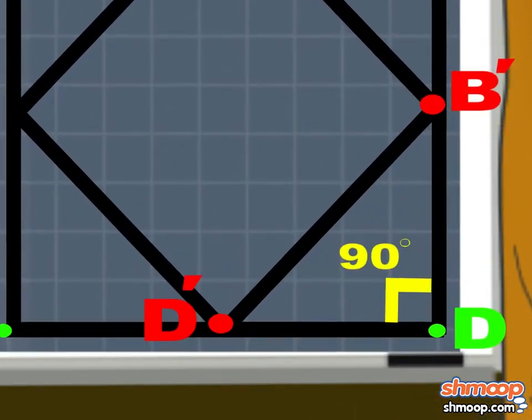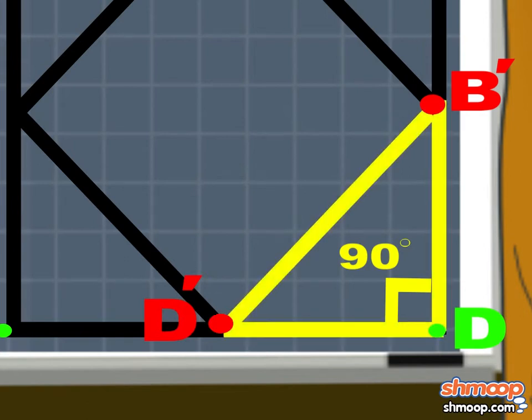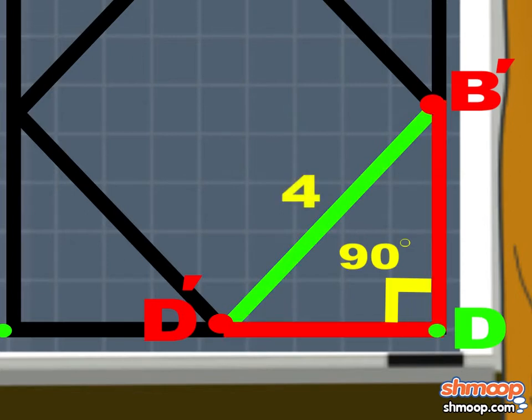Zoom in on triangle B'D'D'. We know it's a right triangle, so we can use the Pythagorean theorem to solve it. We know its hypotenuse, but not its two side lengths. Whatever will the Lumberjacks do?